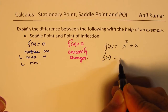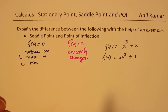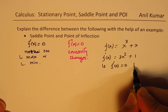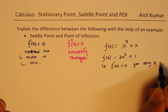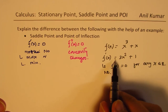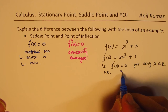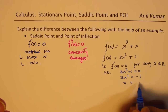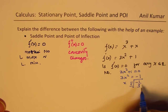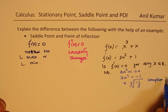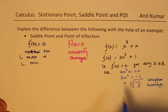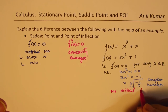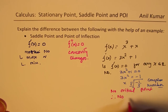The first derivative of this function is 3x squared plus 1. Is f'(x) equal to zero for any real x? No. To make it zero, we'd have 3x squared plus 1 equals zero, giving x squared equals negative one-third, so x equals plus or minus the square root of negative one-third — that is a complex number. So we have no critical point, therefore no saddle point.